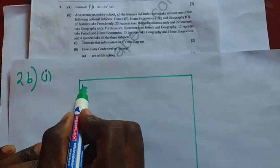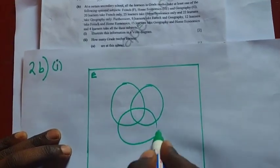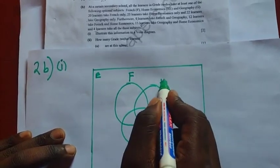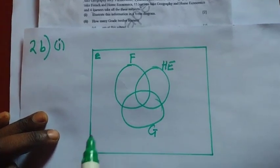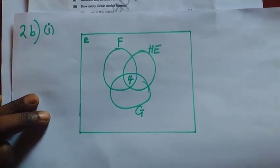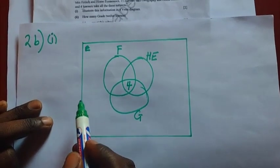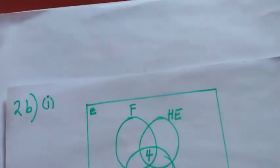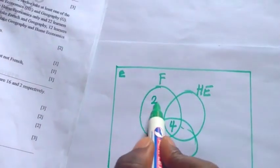In terms of answering Roman numeral 1, we draw the Venn diagram and indicate the three sets. We have French, home economics, and geography. Since 20 learners take French only, we put 20 in the French-only region. 25 learners take home economics only, so we put 25 in the HE-only region. And 22 learners take geography only, so we put 22 in the geography-only region. Reading the information carefully under sets is very important — if you misread it, you get everything wrong.